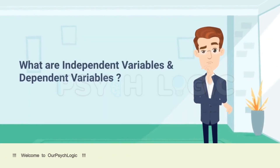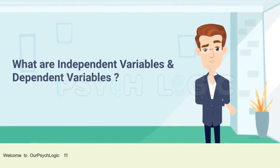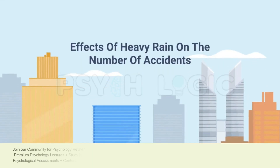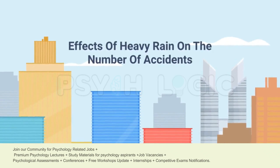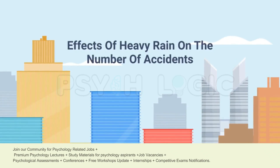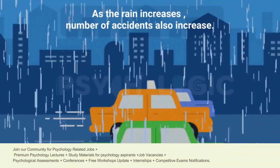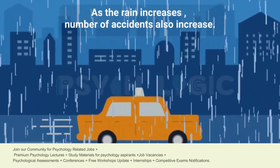Let us start with the first type: dependent and independent variables — the most common and most favorite of all. To understand it clearly in a way that's impossible to forget, let's take an example. Suppose you're conducting research on the effects of heavy rain on the number of accidents happening in a city. You found that as the amount of rain increases, the number of accidents also increases.